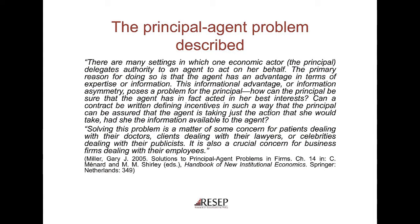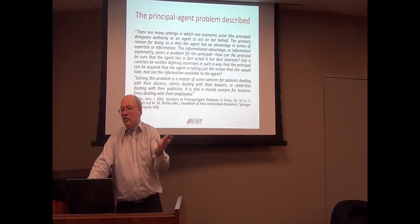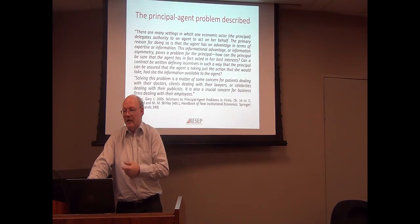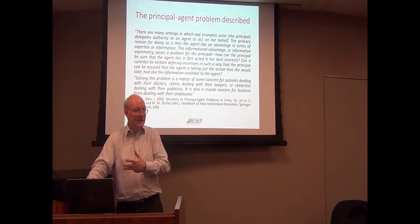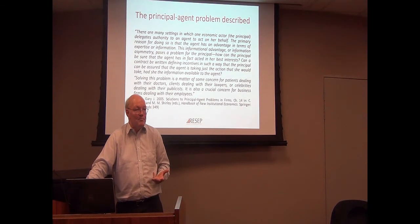This informational advantage or information asymmetry poses a problem for the principal. How can the principal be sure that the agent has in fact acted in her best interest? For example, I can't know whether when somebody tells me that my car has to be taken apart and put together again three times, that's actually necessary — because I know nothing about cars.